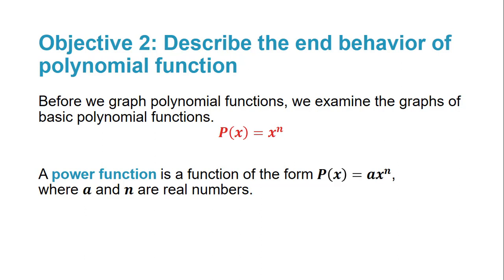Before we graph polynomial functions, we're going to examine the graph of basic polynomial functions, which are of the form p of x equals x to the n. This is an example of a power function — a function of the form p of x equals a times x to the n, where a and n are real numbers. With polynomial functions, our n value is a whole number, so these are a subsection of power functions.